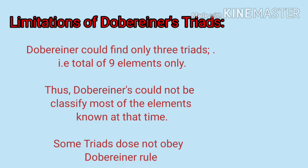Limitations of Dobereiner's Triads: This topic is not given in your textbook. Dobereiner could find only three triads, that is a total of nine elements only. Thus, Dobereiner could not classify most of the elements known at that time. Some triads do not obey the Dobereiner rule.